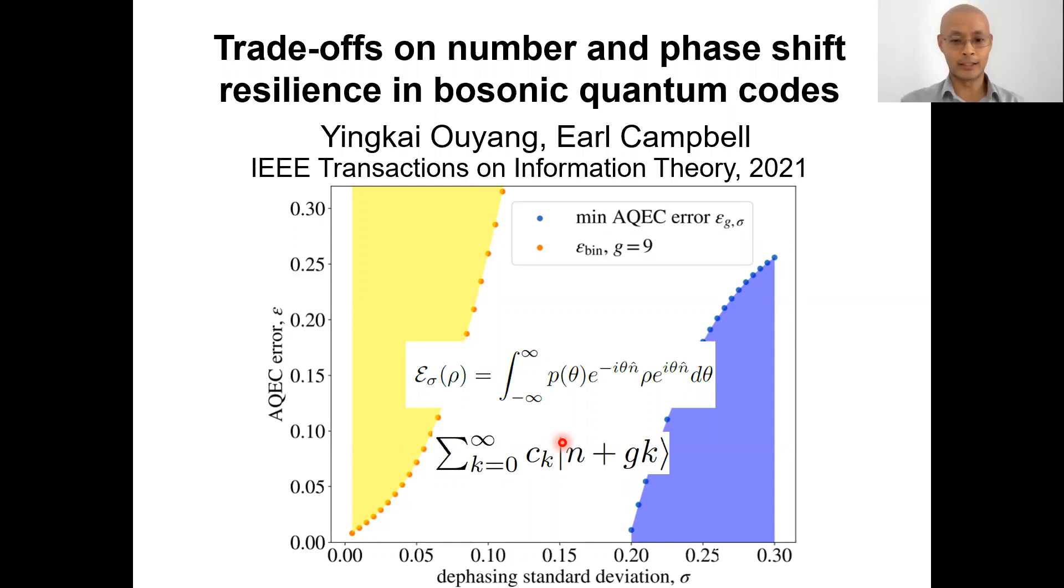So a bosonic code that we are interested in are these so-called gapped bosonic codes, sometimes called rotation invariant codes, and they have this property that they are supported on Fock states that are gapped, a constant multiple of g apart. This g intuitively gives you the bit flip resilience of the bosonic code. The larger the g, the more bit flips it can correct.